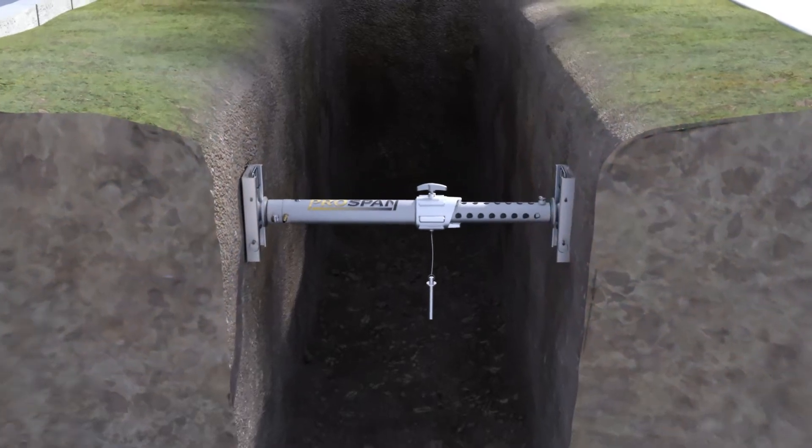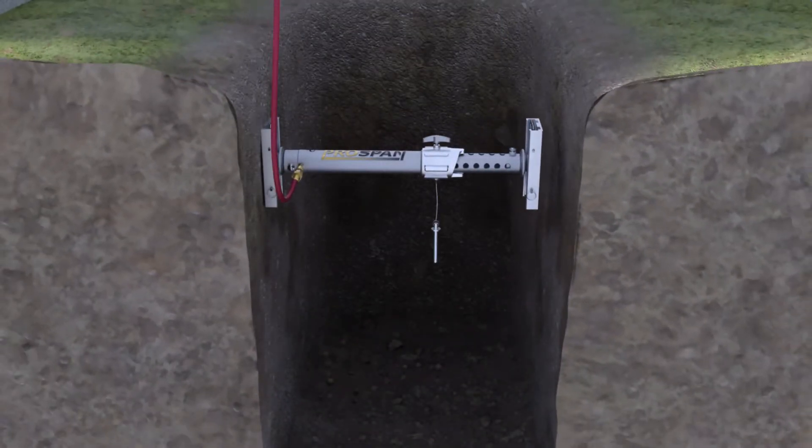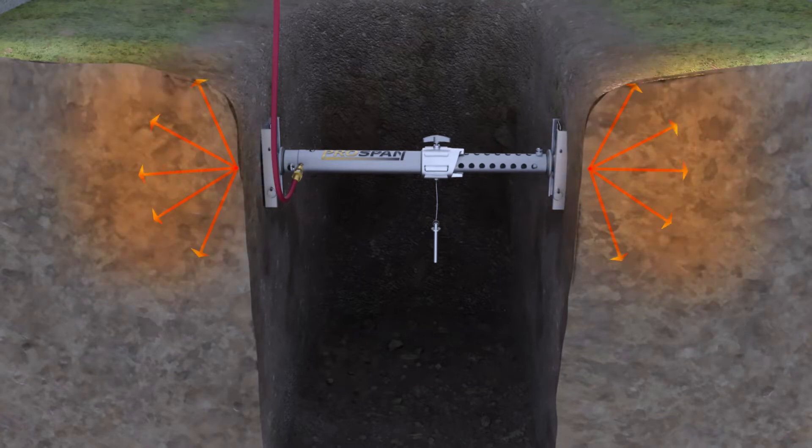It's this soil compaction that holds the trench wall in place, thus preventing cave-in. This is referred to by soil engineers as the arch effect.